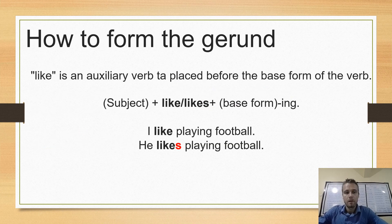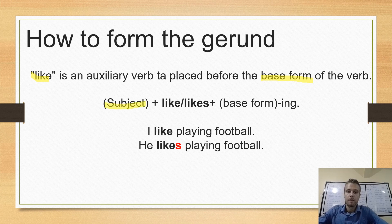Like is an auxiliary verb placed before the base form of the verb. So we start with the subject, add 'like' or 'likes' because this is the simple present, plus the base form plus '-ing'.